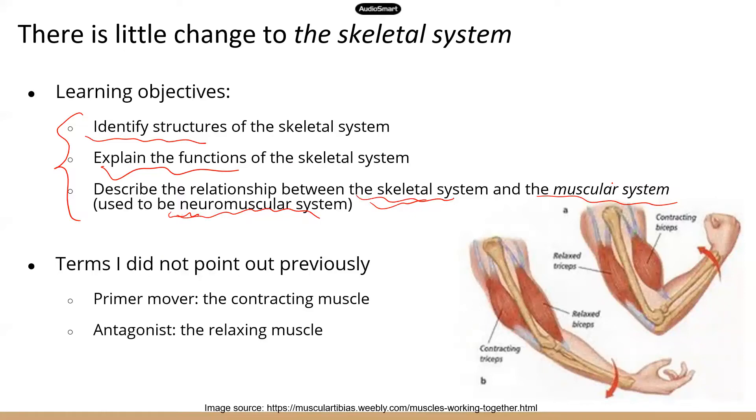The muscles can contract, and because they're attached to the bones, so they use the bones as levers. So when the muscles contract, they move the bones, and this is how the body generates movement. So that's the main relationship between those two.